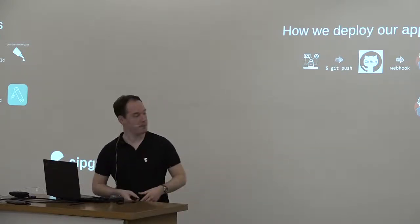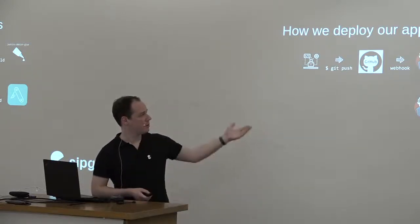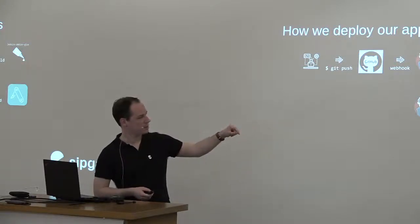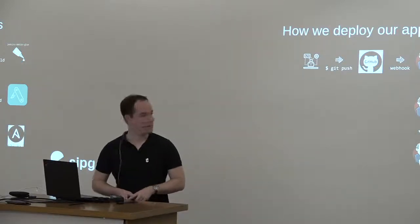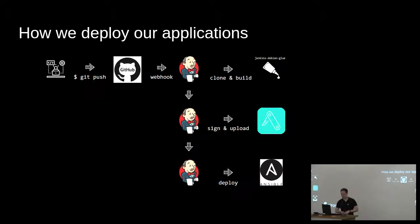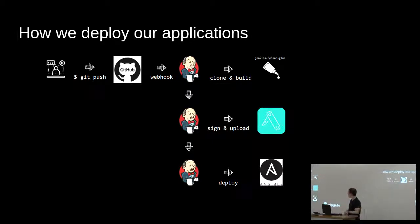These are all stacked Jenkins jobs that call each other and pass information between them. In the very first clone-and-build step, a version number is generated and passed along all the jobs. The Ansible playbook in the final step installs that very specific package — not the latest one or something else — ensuring a consistent and predictable deployment.